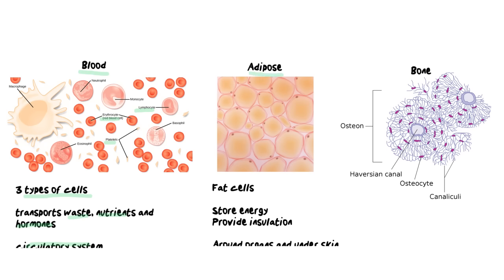Next we have adipose tissue, largely made out of fat cells. Interestingly, you're born with a certain number of fat cells — if you gain fat, the cells just get bigger rather than multiplying. The purpose of adipose tissue is to store excess energy when you don't use all your carbohydrates. It also provides insulation for heat retention and helps keep the body cool depending on the external environment. We find adipose tissue around our organs for cushioning, and also under your skin, allowing it to be more supple and flexible.